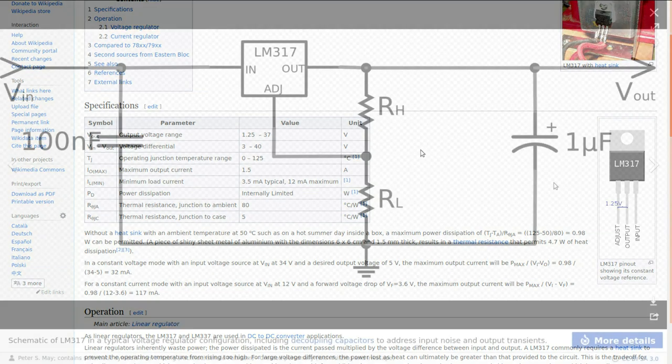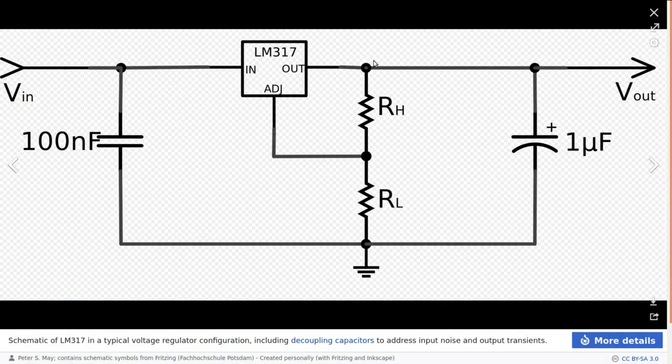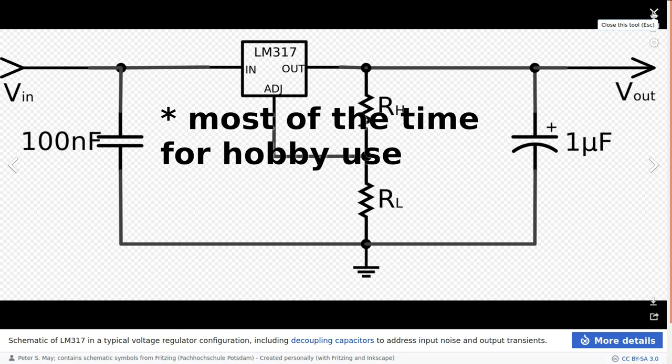You just put a voltage divider between the output and ground and set that so that it gives you a volt and a quarter below what you want your output to be. There's ways of calculating that, but most of the time you just do it experimentally.